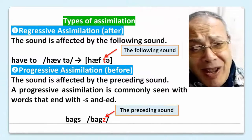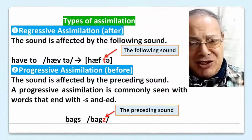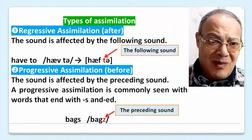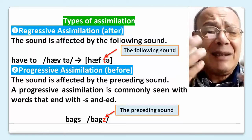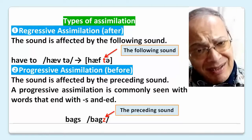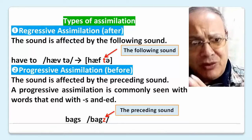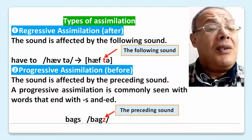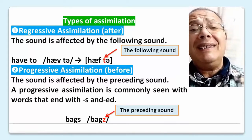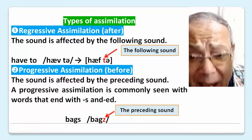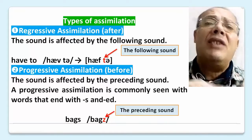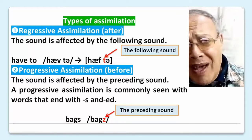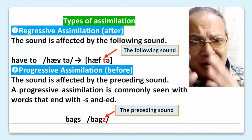Types of assimilation. Regressive assimilation — the sound is affected by the following sound.